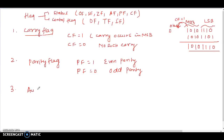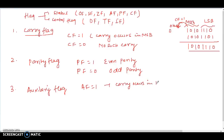The third flag is the auxiliary flag. AF is equal to 1 if a carry occurs in the LSB — the lower nibble. AF is equal to 0 if no such carry occurs. So if carry occurs in the LSB position, the auxiliary flag is 1; otherwise it is 0.